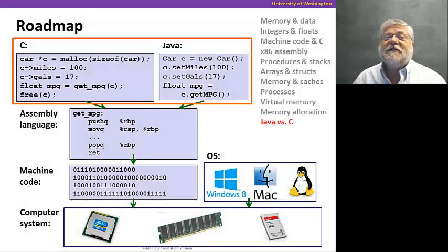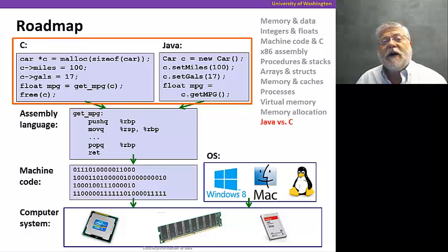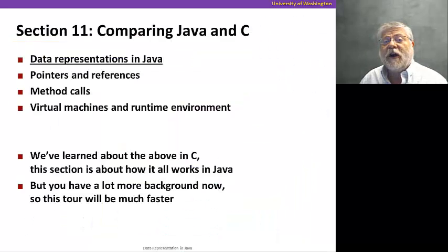We've come to the last section of the course. At this stage we're going to talk about how higher level languages like Java are implemented in computer systems, and we're going to leverage the knowledge we have about how things are done using C, what we focused on as our language so far.